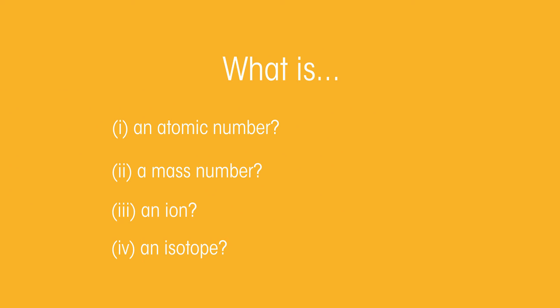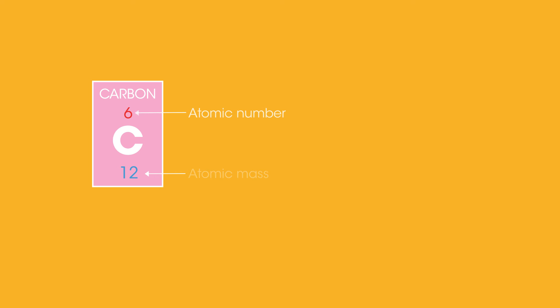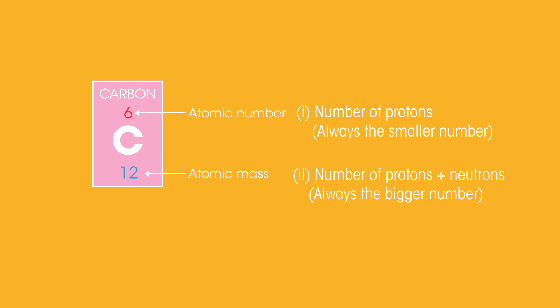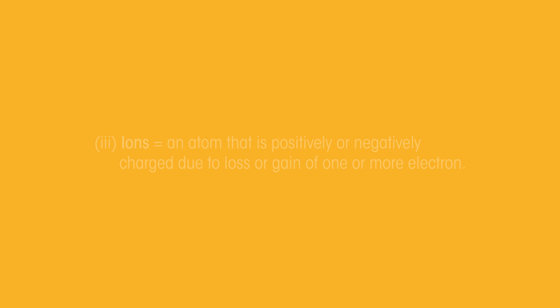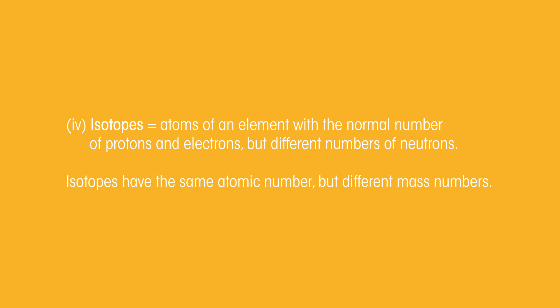So, there we have atomic numbers, mass numbers, ions and isotopes. Do you know what all four are? Pause the video and have a think. Did you get them right?